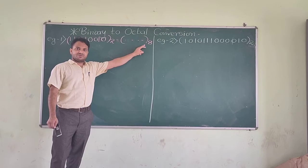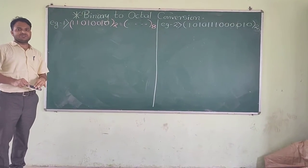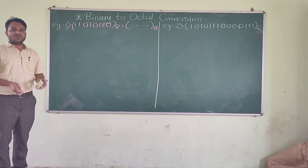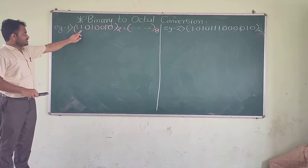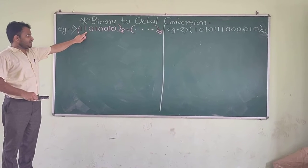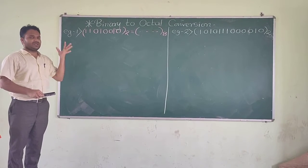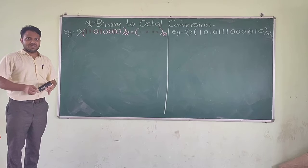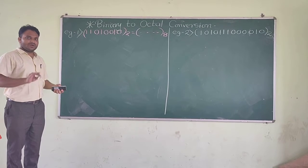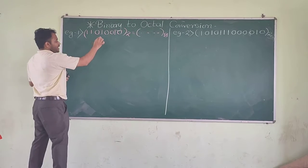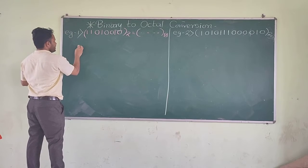So now just see the procedure. This is a very simple procedure. What you have to do is: suppose this is the number given to you and you have to convert it into the octal number system. For this, what you have to do is you have to just group this number.